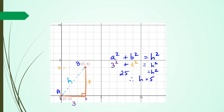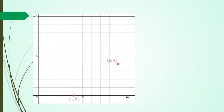So for this question the distance between A and B equals 5 units. Let me show you another example. In this example once again I'm going to create a right angle triangle to actually work out what the distance between these two points is.